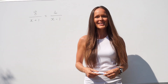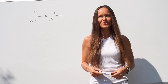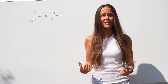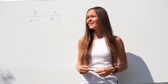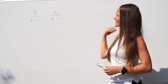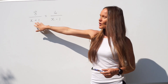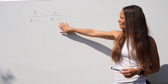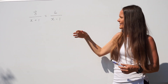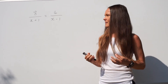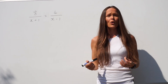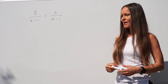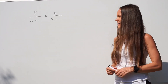Hey guys, in this lesson I'm going to show you how to solve equations that involve algebraic fractions. So in this first example it says 8 over x plus 1 is equal to 4 over x minus 1. The first thing I want to do is get rid of these fractions, and I'm going to use a method called cross multiplying.